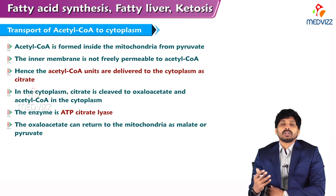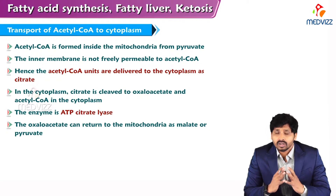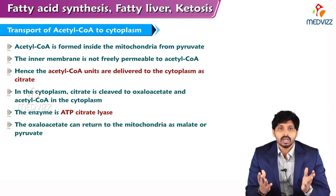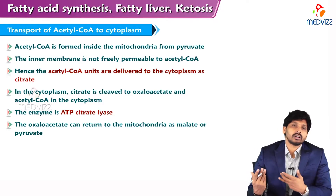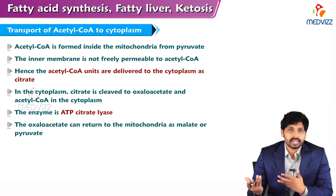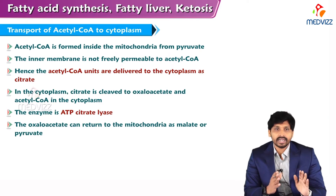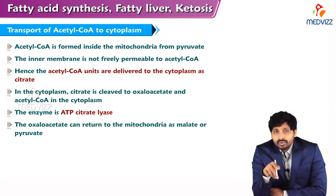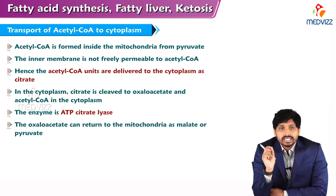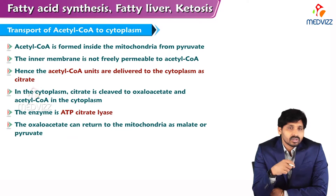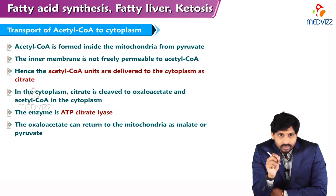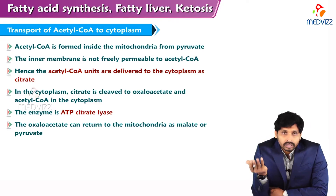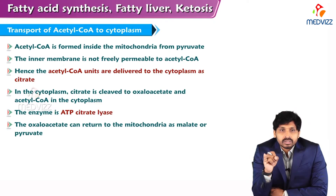Regarding the transport of acetyl-CoA to the cytoplasm — the starting material for fatty acid synthesis is acetyl-CoA. In gluconeogenesis, glucose is synthesized from non-carbohydrate sources like pyruvate, lactate, glycerol, and gluconeogenic amino acids. Similarly, to synthesize fatty acids we require acetyl-CoA as the starting substance. Acetyl-CoA is required for the TCA cycle — it combines with oxaloacetate to produce citric acid — but it also has other functions such as lipid synthesis and ketone body synthesis.